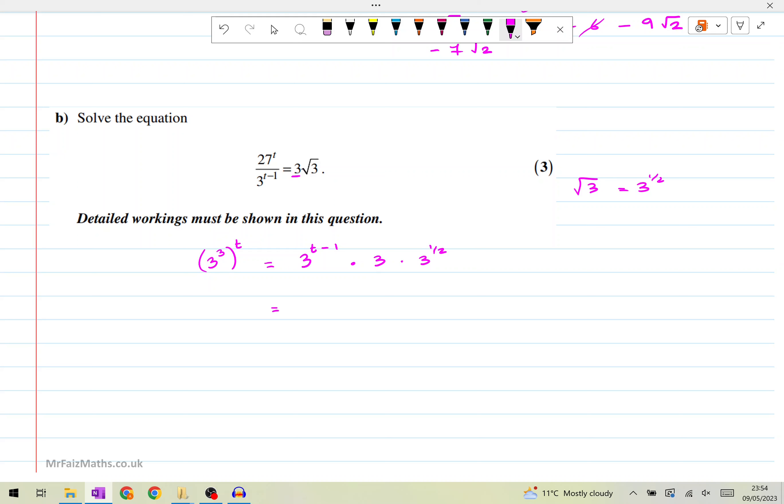So what we can now do is just apply rules of indices. So on the left hand side, if you raise something to a power and to a power again, you multiply the two powers together. So this will be three to the power three t. On the right hand side, we add the powers together. So if you are multiplying, by the way, the dots here just mean to multiply these things. So it's that times that. So if you add the powers together here, we have t minus one, add plus one, because that's three to the power one, plus another half. So t minus one add one plus half will simplify to t plus half. So on the right hand side, we are going to have three to the power t plus a half.